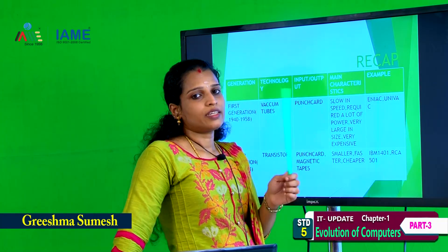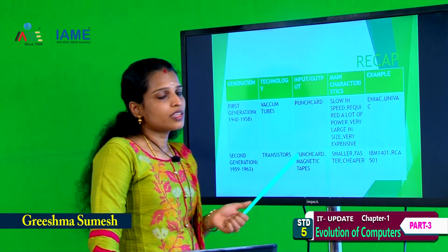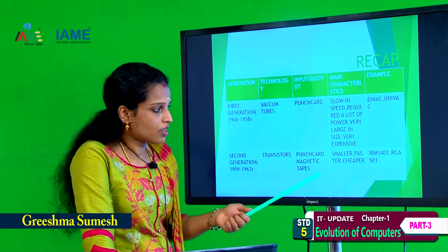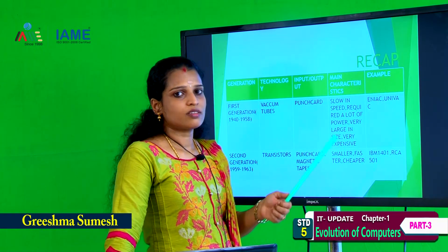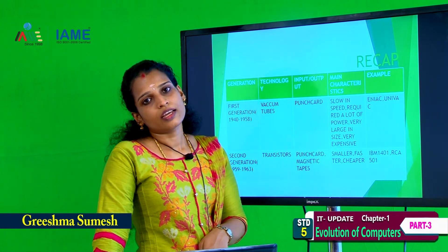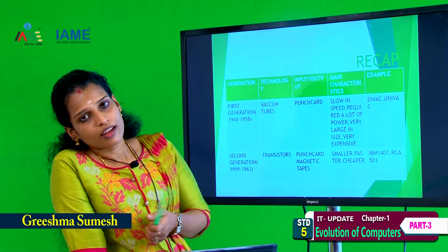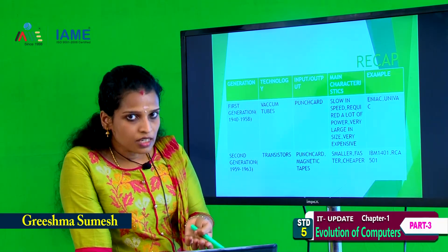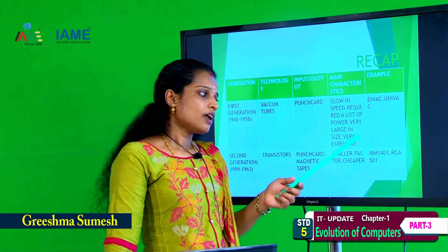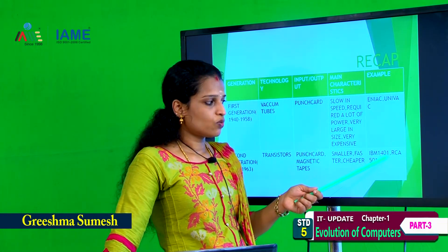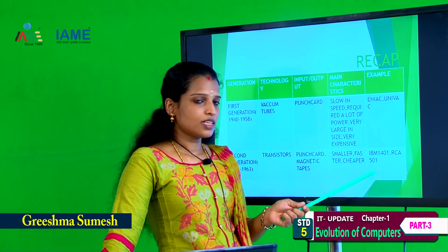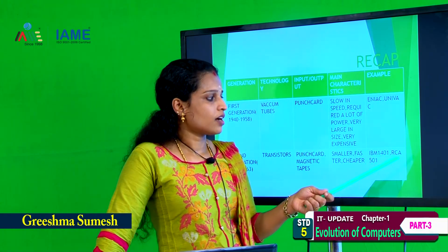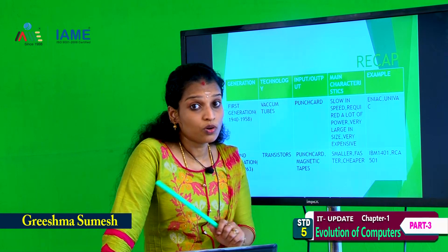Punch card and magnetic tape are used in second generation computer. Main characteristics are smaller, faster and cheaper. Examples: IBM 1401 and RCA 501.